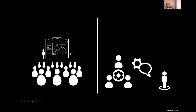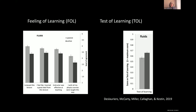The results reveal the difference between those two questions. On the feeling-of-learning test, the passive condition won in every question — students clearly enjoyed the passive experience more, felt they learned more, felt the instructor was more effective, and wished all their physics courses were taught that way. But on the actual test of learning, in both subjects and both conditions, the active learning group consistently outperformed the passive group.